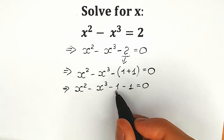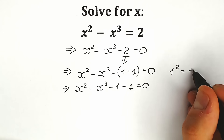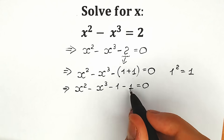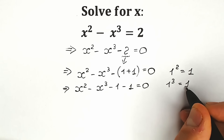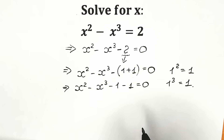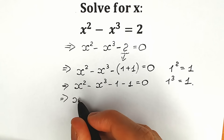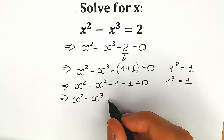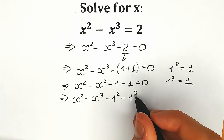Right now, instead of this 1, I'm going to change it to 1 squared. Since 1 squared equals 1, we can replace it. Similarly, this 1 we can replace by 1 cubed, since 1 cubed is also 1. So instead of the first 1, we write 1 squared, and instead of the second 1, we write 1 cubed. As a result, we have x squared minus x cubed minus 1 squared minus 1 cubed.